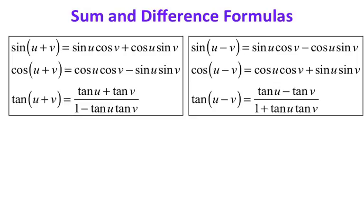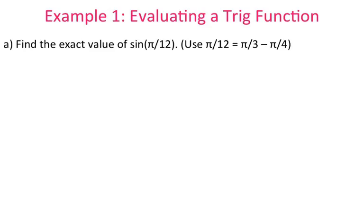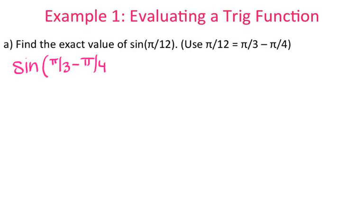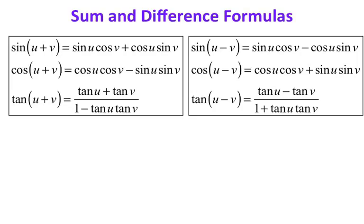So let's go ahead and do a problem. Find the exact value of sine of pi over 12, and I want you to use the fact that pi over 12 is equal to pi over 3 minus pi over 4. So what I can do is I can rewrite this problem as sine of pi over 3 minus pi over 4, instead of looking at it as pi over 12. Then I'm going to look back at my list of formulas — I'm doing sine of a difference because we're subtracting, so I'm going to follow that formula.